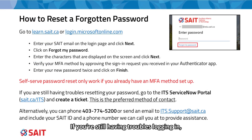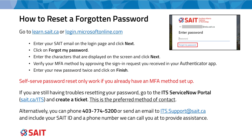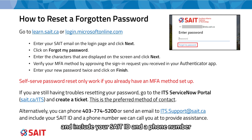If you are still having trouble logging in, go to the ITS ServiceNow portal at sait.ca/ITS and create a ticket. This is the preferred method of contact. As an alternative, you can phone 403-774-5200 or send an email to its.support@sait.ca and include your SAIT ID and a phone number we can call you at to provide assistance.